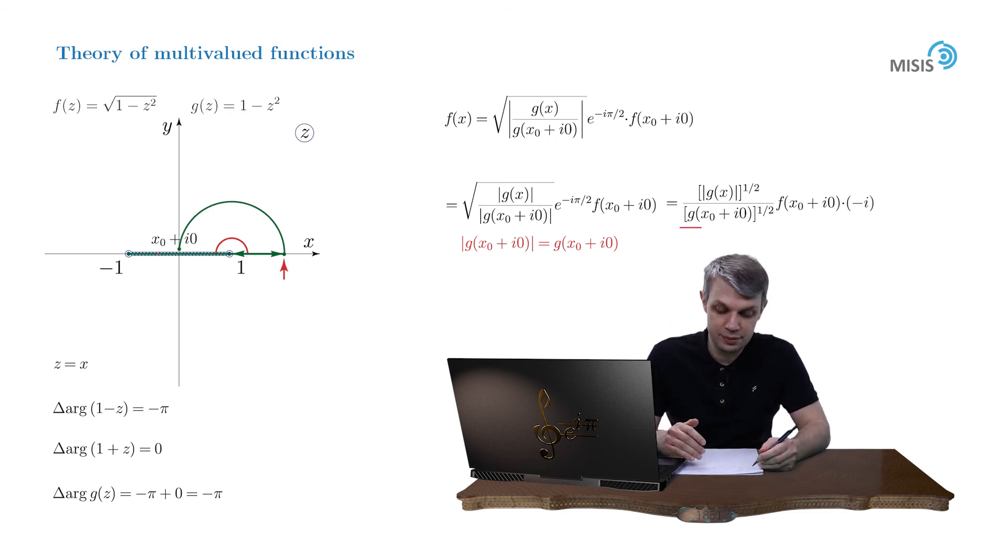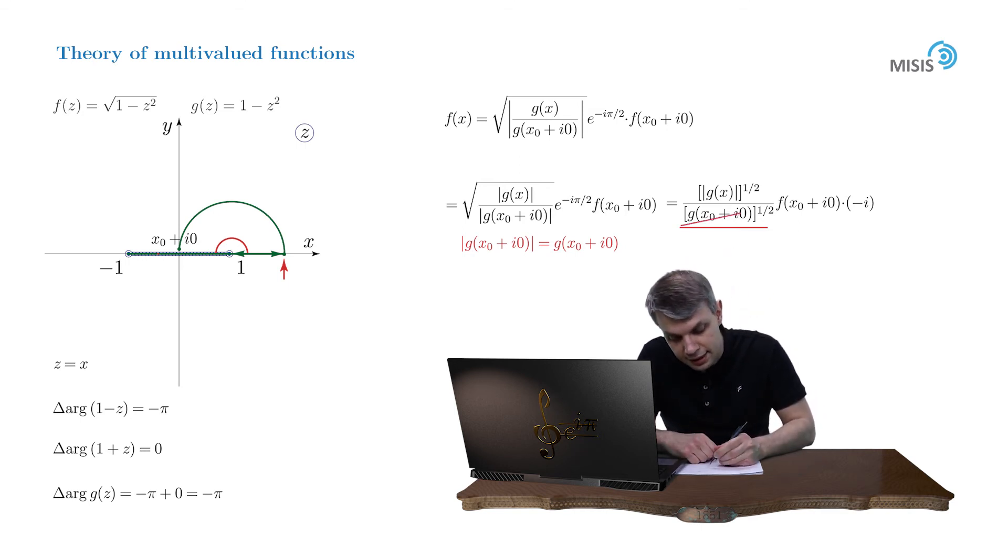And now have a more attentive look into our denominator. What I want to argue is that it's equal to f of x0 plus i0. Why? That's because f of x0 plus i0 is just the arithmetic root of our square root of g function. So it's a positive number. And the same positive number stays in the denominator of our fraction. So they're identical and can be cancelled.